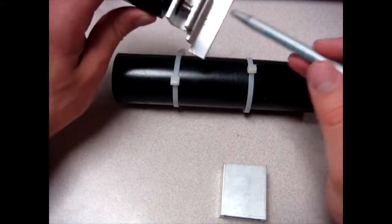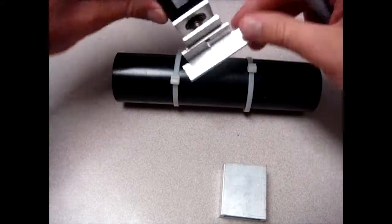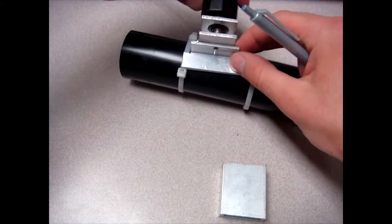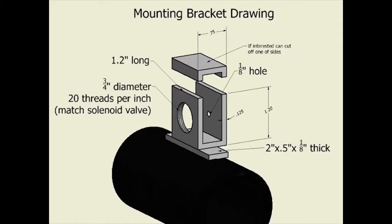The next step in our process is to make the bracket that will hold the solenoid valve onto the tube like this. Here is a drawing that shows you the dimensions and also some of the basic steps. But I will go ahead and show you in person some of the things to do.